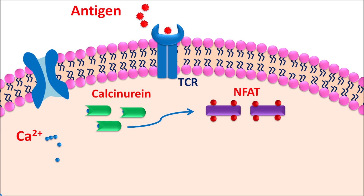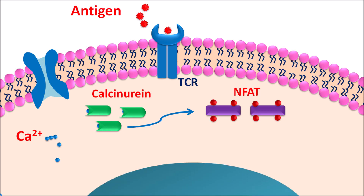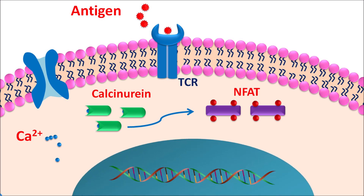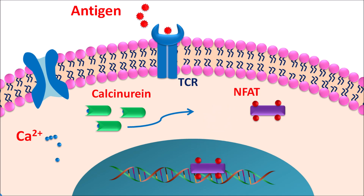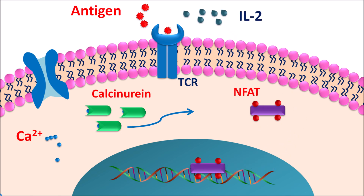Calcium can bind to calcineurin, forming a calcium-calcineurin complex which is then activated. It then targets NFAT — nuclear factor of activated T-cells. The activated NFAT can then target the DNA within the nucleus, producing gene transcription and protein synthesis. One of the proteins formed is IL-2, which is released from the T-cells. This IL-2 acts on IL-2 receptors, increasing T-cell amplification and further enhancing immune response.